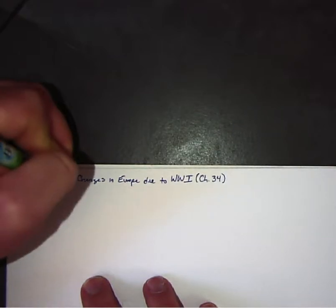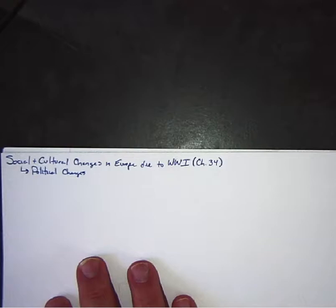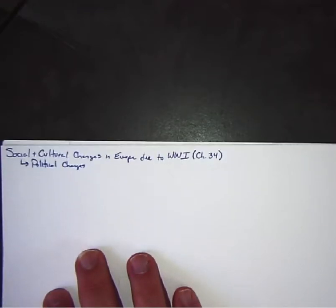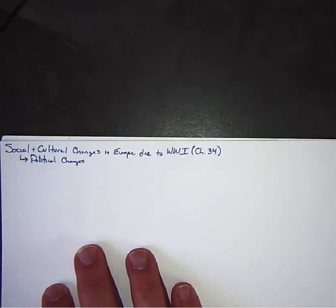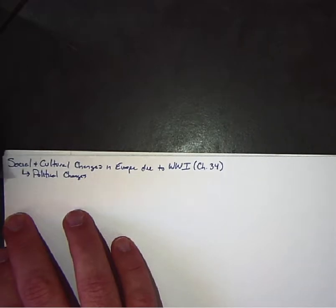We're going to be looking at Europe and then the rest of the world throughout time period six. We'll look at Europe in chapter 34 and how it changed as a result of World War I. In chapter 35 we'll look at the rest of the world and how World War I affected them. We'll go back to Europe, then the rest of the world again after World War II.